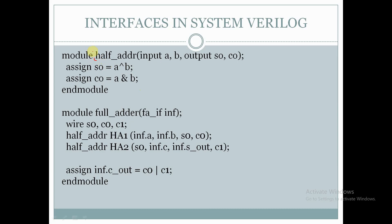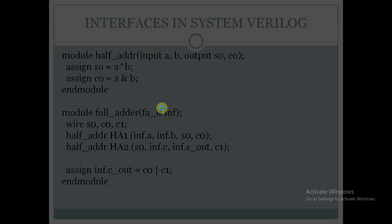Here, like in the previous example, we are taking the module half_adder where a, b are the input signals and s0 and c0 are output signals. We are assigning s0 as a XOR b and c0 as a AND b, and here we are ending the module.